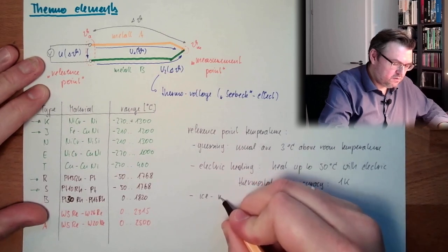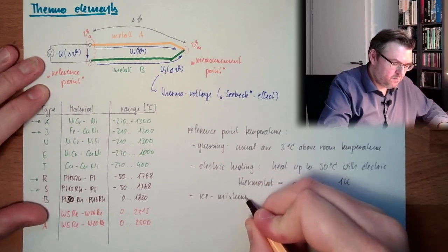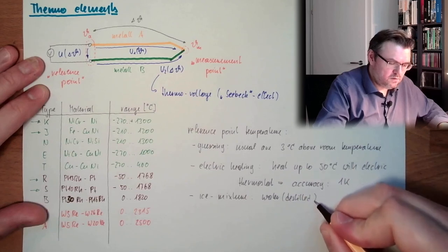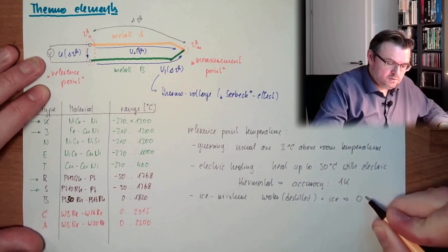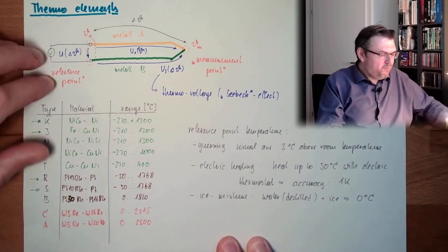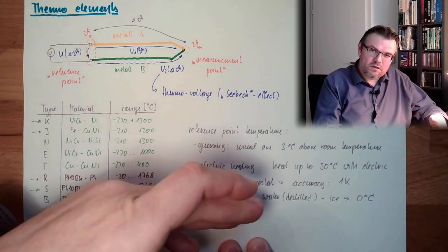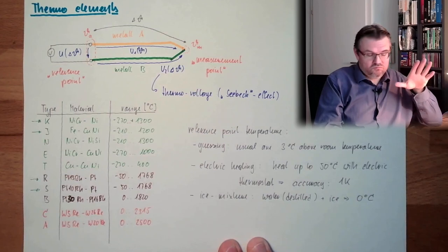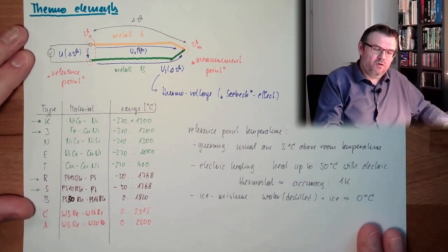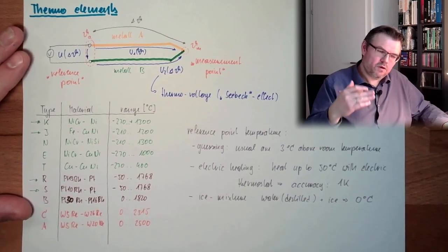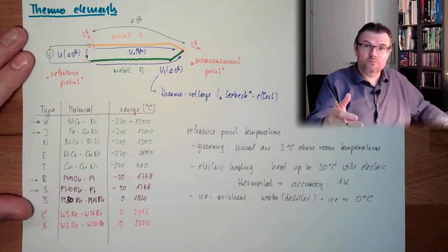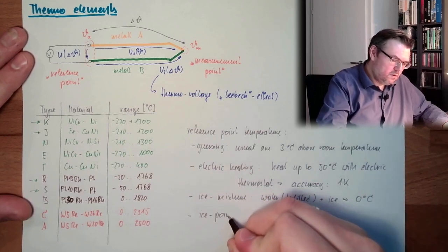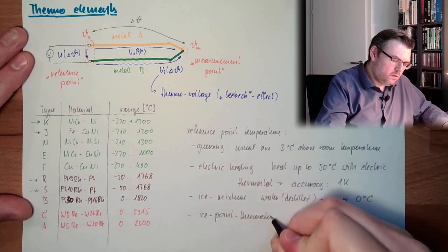Water distilled and ice, zero degrees Celsius. We simply place this into an ice mixture, distilled water to be electrically isolating, and ice, zero degrees Celsius. Quite accurate. However, this is for experimental things, high quality experimental measurements. For permanent measurements, you do not want to have a bucket full of ice. So you are using an ice point simulator.